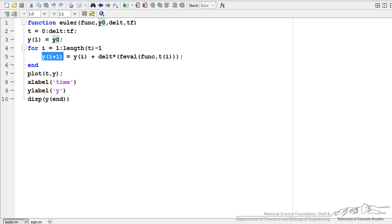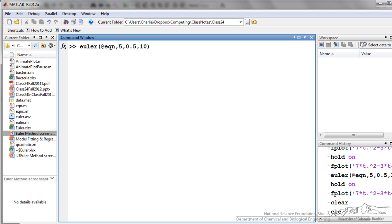For i equals 1 to length, I am just putting in that equation. The next function value is equal to the current function value plus our time step times evaluating the function at our current time step. And then I am plotting this and labeling it.